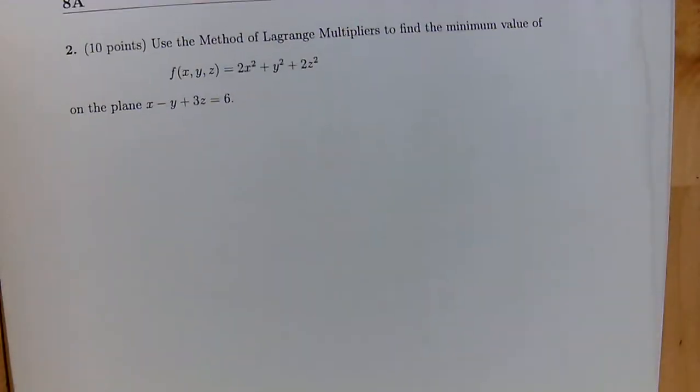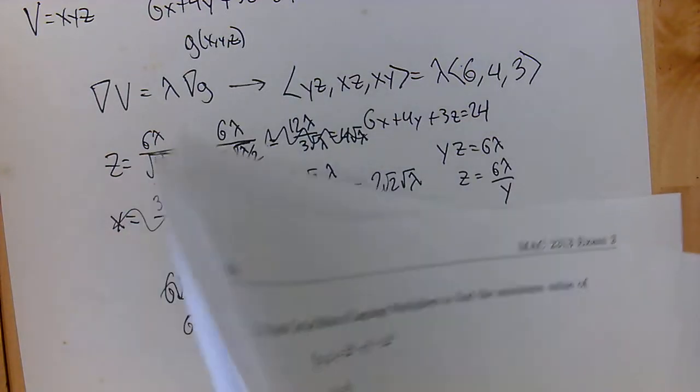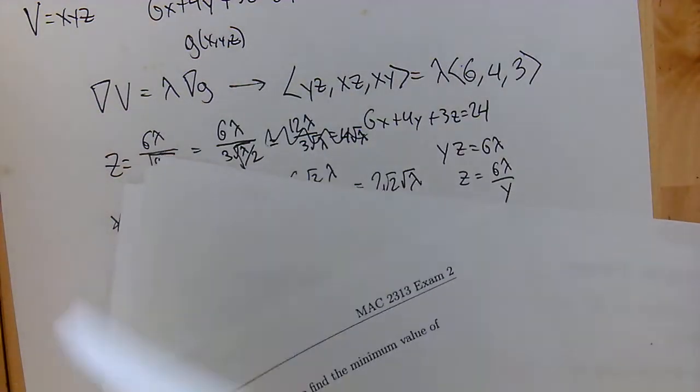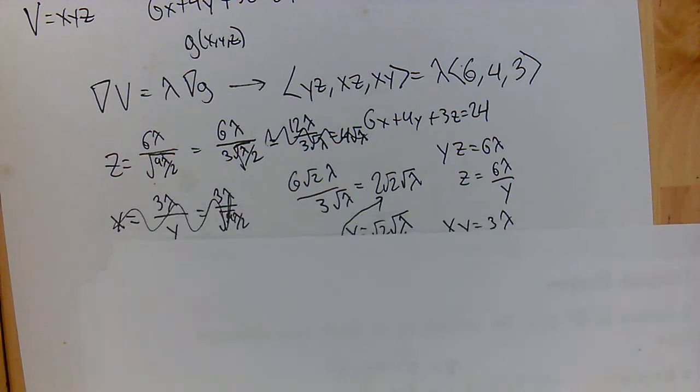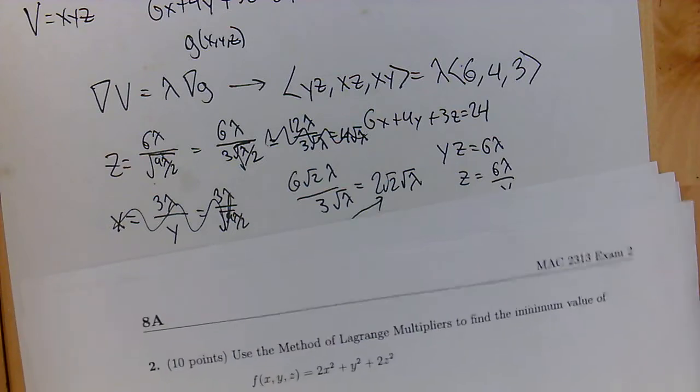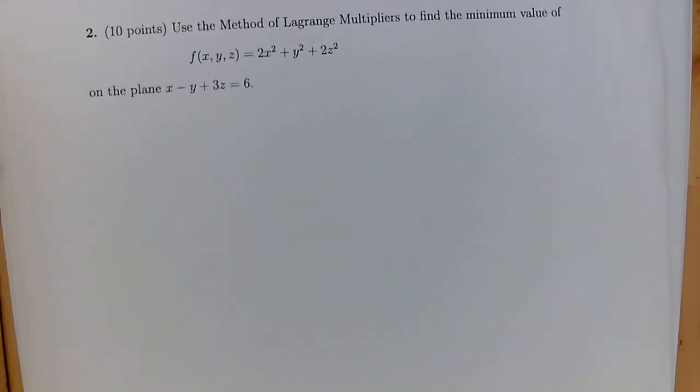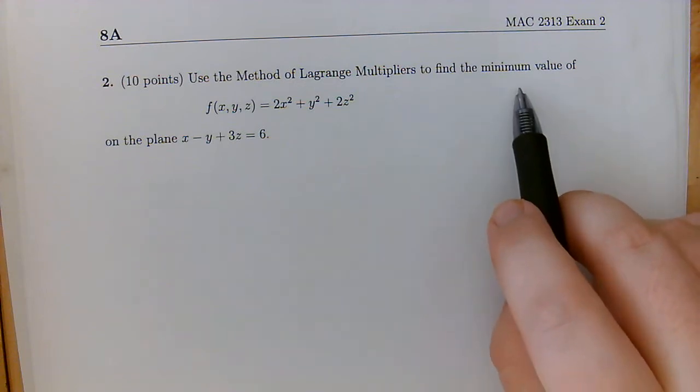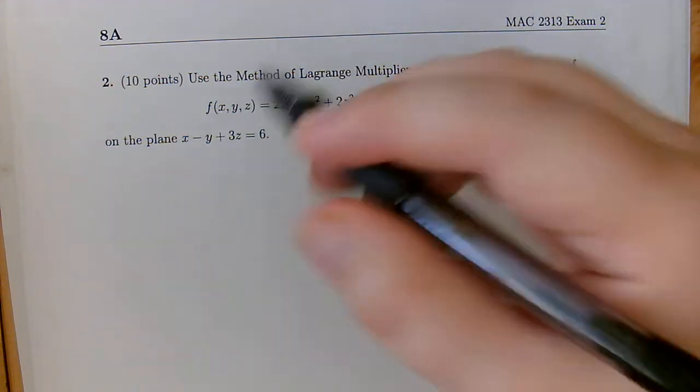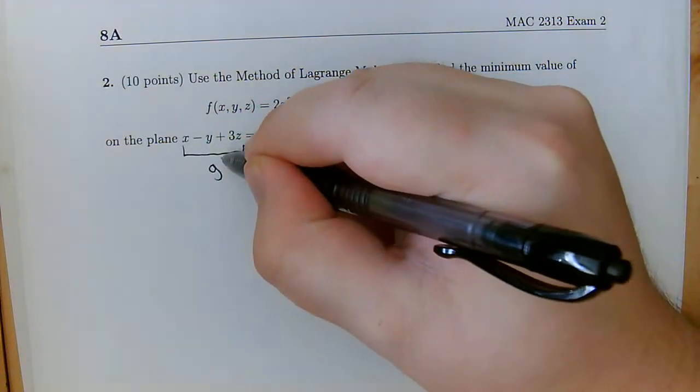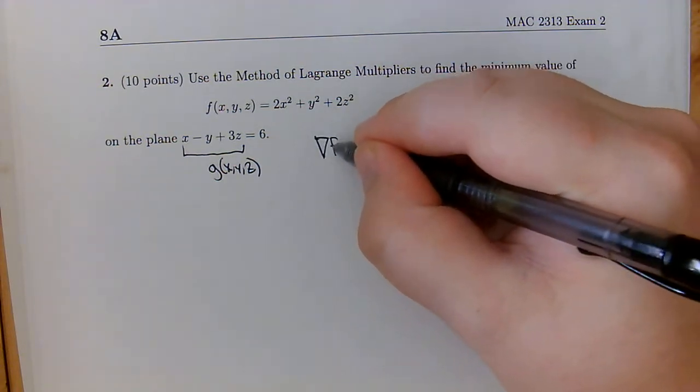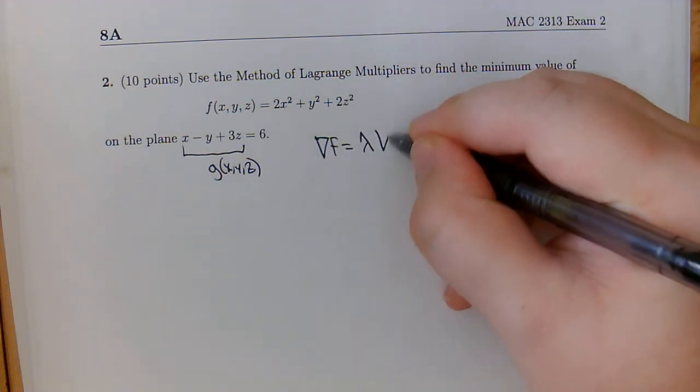All right. Next, let's move on to the free response part of the exam. Okay, well, I have two here right now. I'm just going to go ahead and do two first, and I'll see what I can do about finding number one. So use the method of Lagrange multipliers to find the minimum value of this function on this plane right here, and this is going to be our constraint function. The method of Lagrange multipliers has us equate the gradient of f to lambda times the gradient of g.